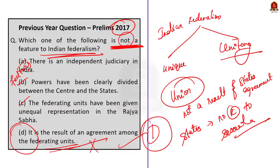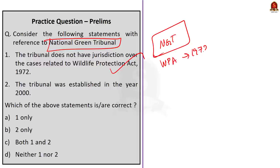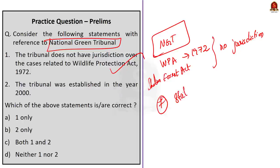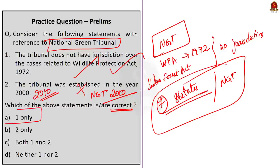Now for the practice questions. Question 1 is regarding the National Green Tribunal — a two-statement question. Statement 1 is correct: the NGT has not been vested with powers to hear matters relating to the Wildlife Protection Act 1972, the Indian Forest Act 1927, or various state laws relating to forests and tree preservation. If you listened carefully to the discussion, you would know the statutes covered under NGT. Statement 2 is incorrect — the tribunal was established in 2010 under the National Green Tribunal Act 2010. The question asks for the correct statement, so the answer is Option A — Statement 1 only.